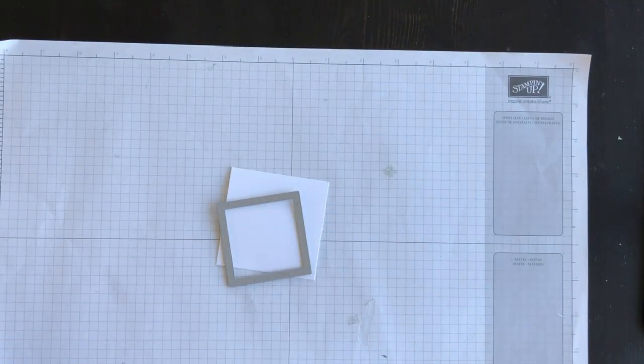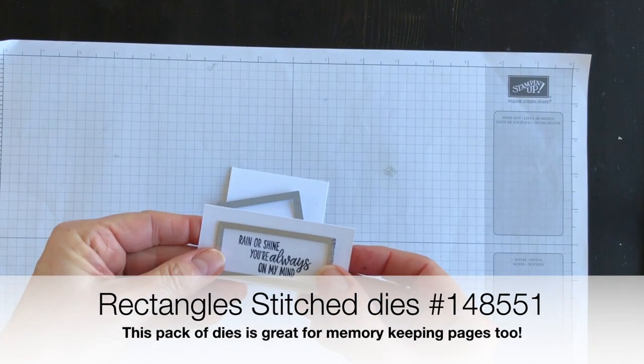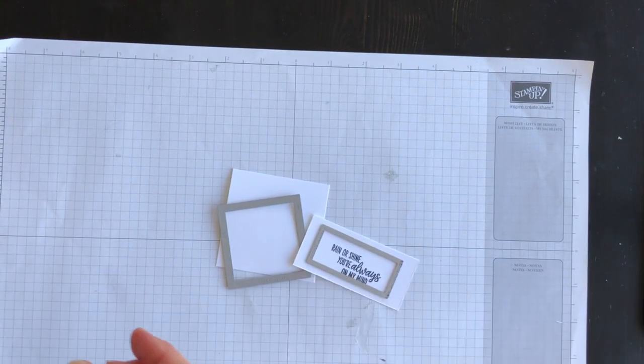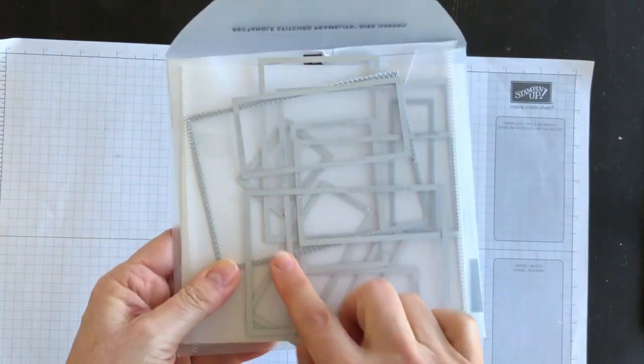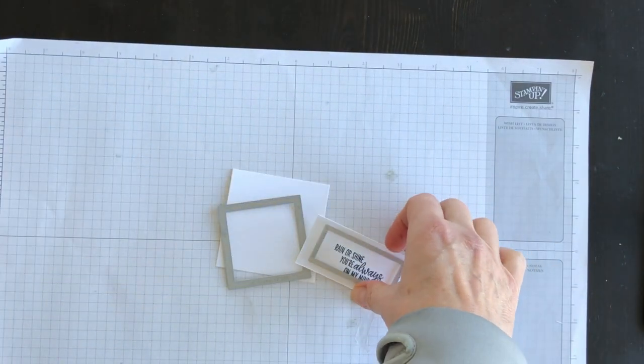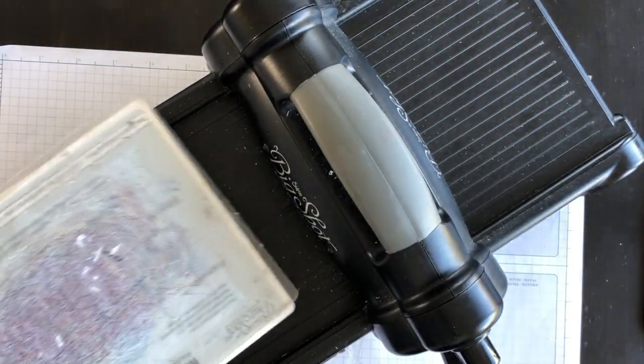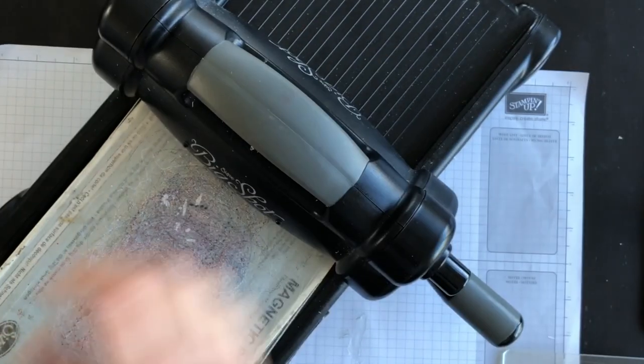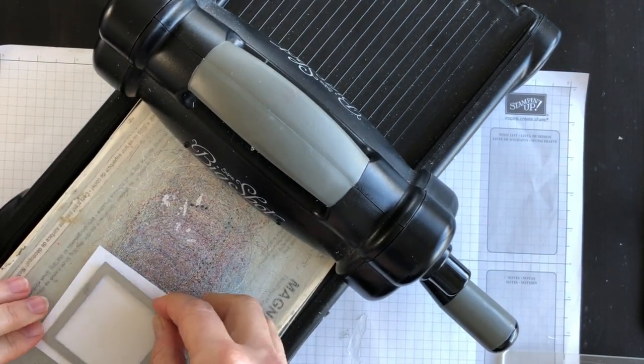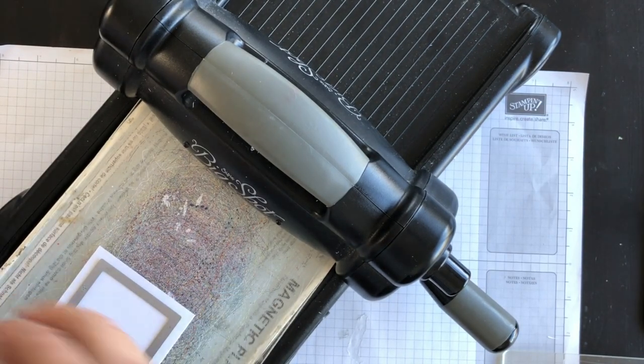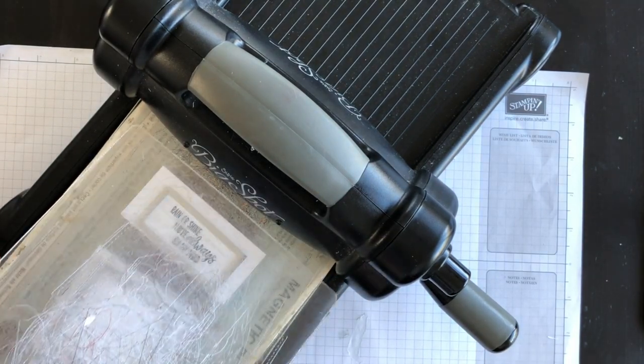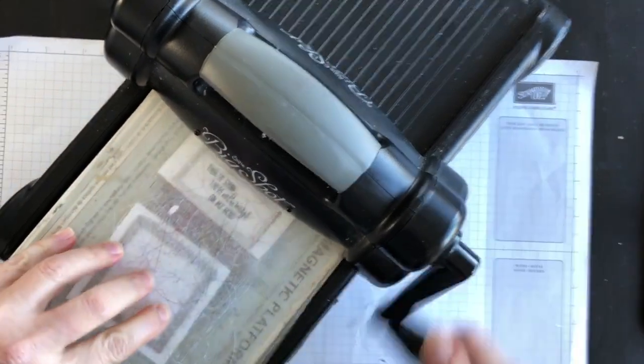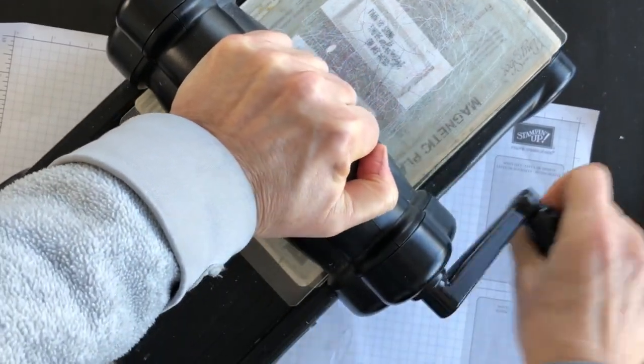And then I'm going to bring in one of my rectangular stitched framelits. You get so many of those. The rectangle stitched framelits dies, so many of them in there. So I'm going to create layers that have that decorative edge. So I'm going to bring in my die-cutting machine, and I'm going to put the whisper white with the square, and then I'm going to use the frays with the rectangle. Get them all centered, and I'm going to run them through my die-cutting machine.